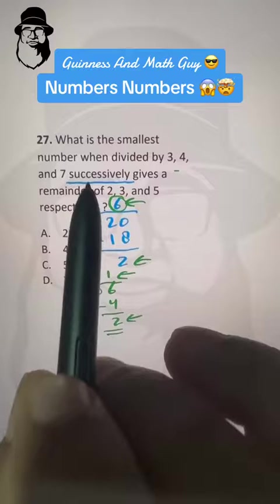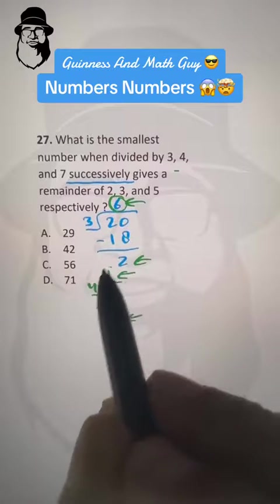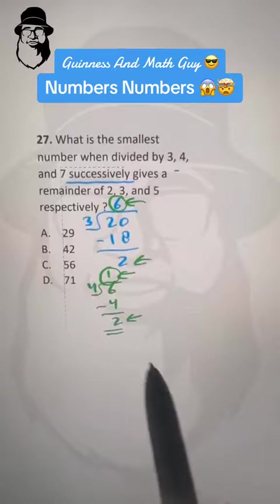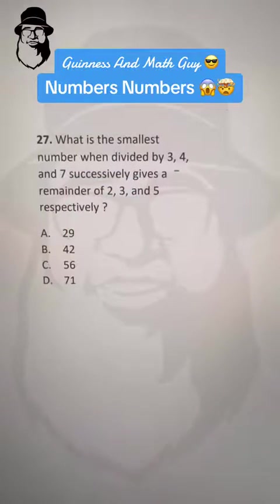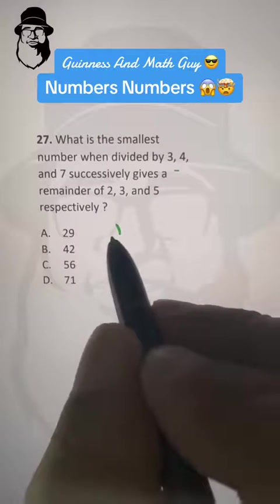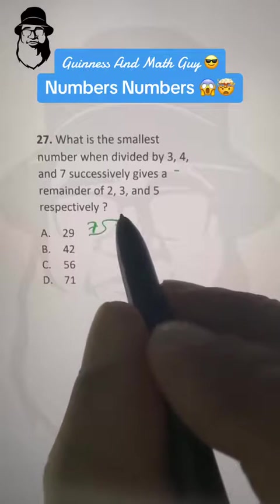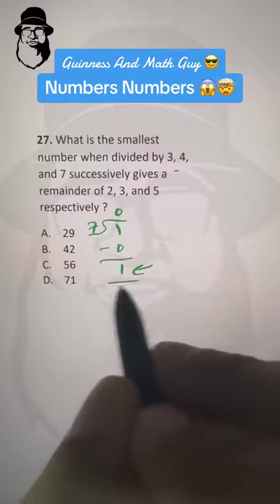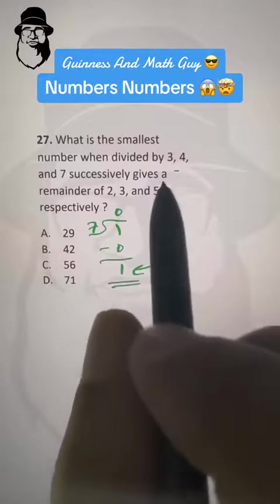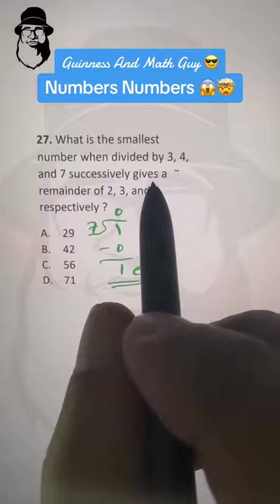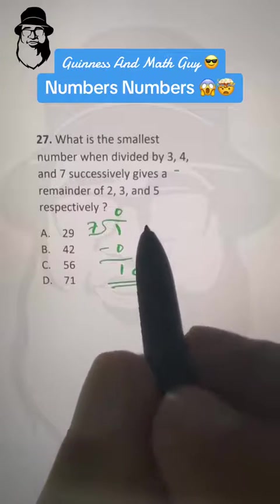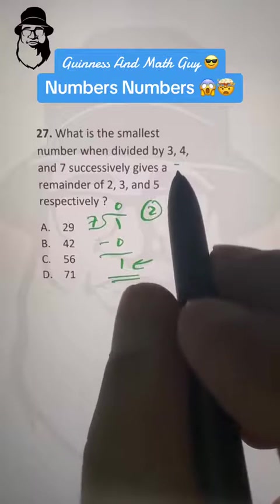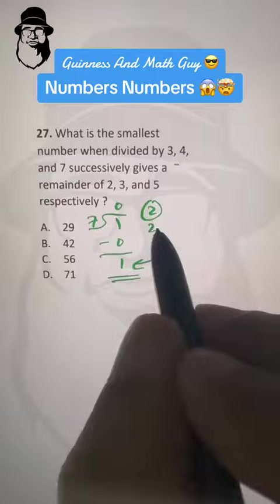Then successively means this answer 1, we divide it by 7. Let me erase this. So 7 times 0 is 0 and we have remainder of 1. So 20 divided by 3 gave us 6 remainder 2, and then 6 divided by 4 also gave us remainder of 2.